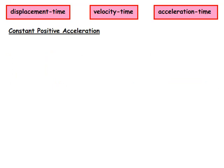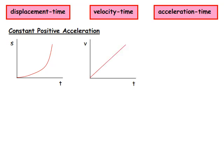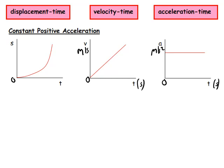Let's look at the next option: a positive constant acceleration. For the acceleration time graph, it's a straight horizontal line across the graph. For the velocity time graph, if there's a constant acceleration, we get a straight line through the origin. For the displacement time graph, if the object is accelerating — getting faster — it covers more distance, greater displacement at the end, which is why the graph curves upward.